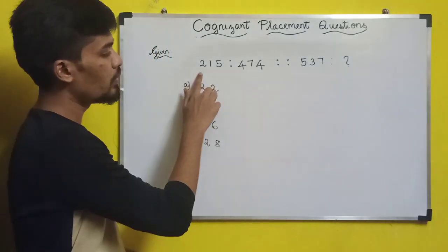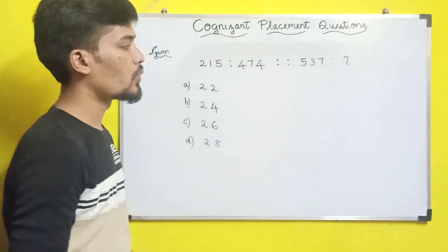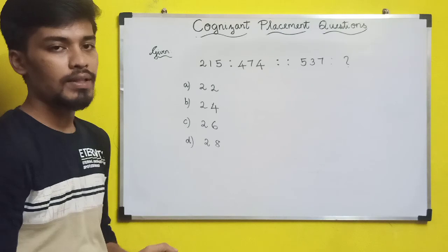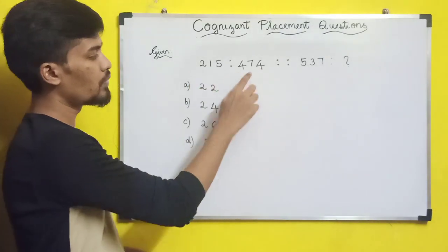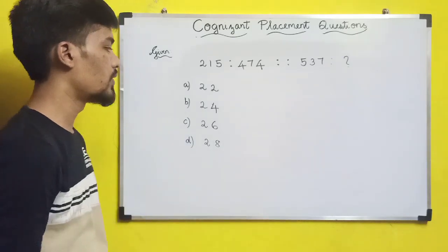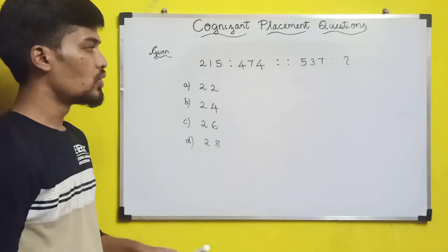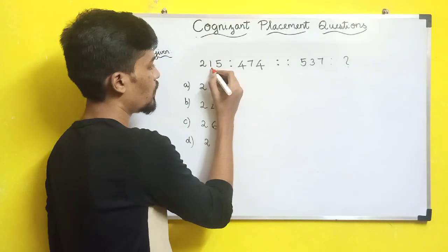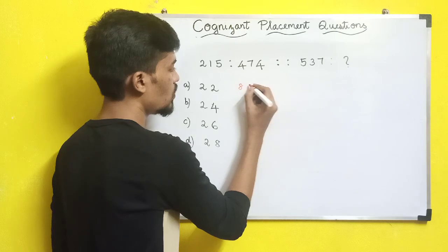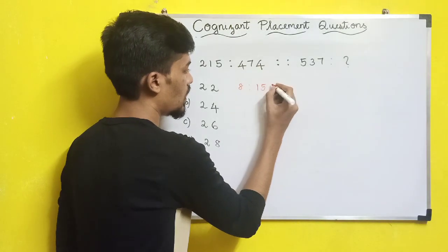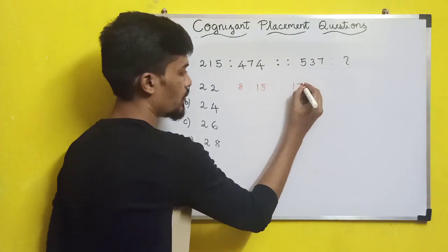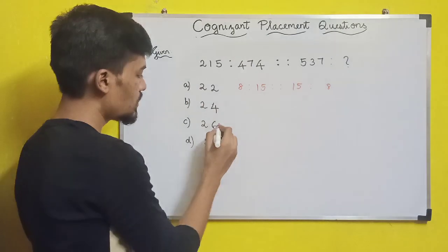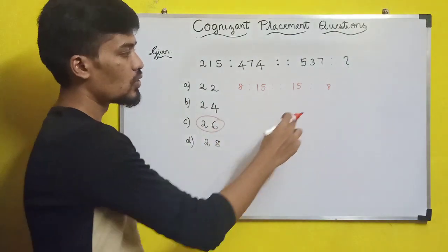Next question: 215 is to 474 as 537 is to ?, with options 22, 24, 26, 28. The logic is to find the digit sum: 2+1+5 = 8, and 4+7+4 = 15. For 537: 5+3+7 = 15. So we need an option whose digit sum equals 8. Checking: 2+6 = 8, so the answer is 26.